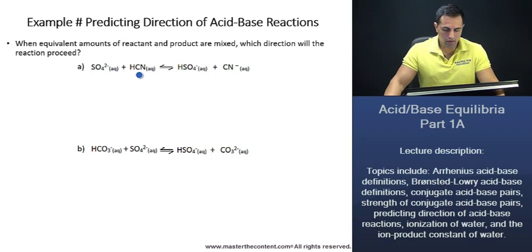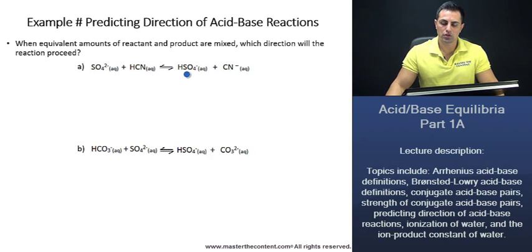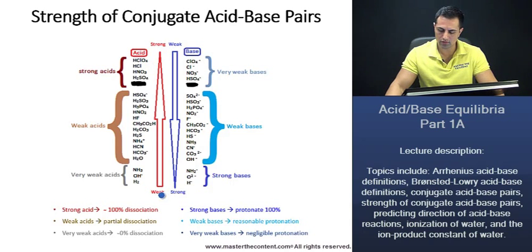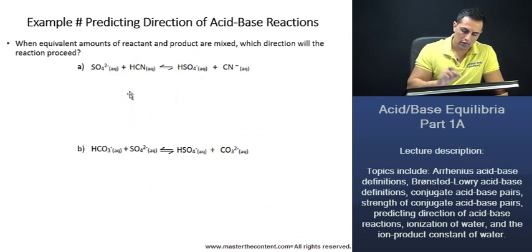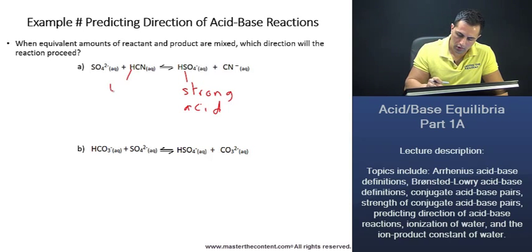Here we have hydrocyanic acid and we also have hydrogen sulfate. We need to identify the stronger acid of the two. We can go back to the chart we had. We see hydrogen sulfate up here and hydrocyanic acid down here. Taking note of the direction of acid strength and base strength, we see that base strength increases in one direction. Hydrogen sulfate is going to be our stronger acid, so we label it as our strong acid and hydrocyanic acid as our weak acid.